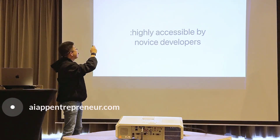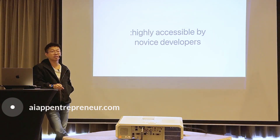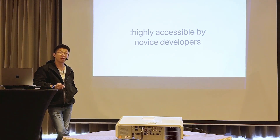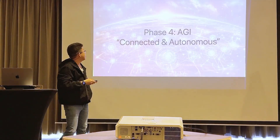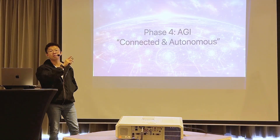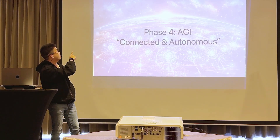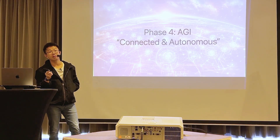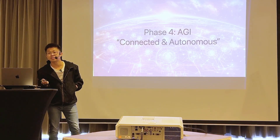So to summarize: in the third phase, which is right now, AI is highly accessible by novice developers. You don't need to hire advanced developers — just a junior developer or programmer is okay. In the next phase, the fourth phase — though we don't know how long — we call it AGI, Artificial General Intelligence. It's going to be as smart as a human, but when? We don't know.